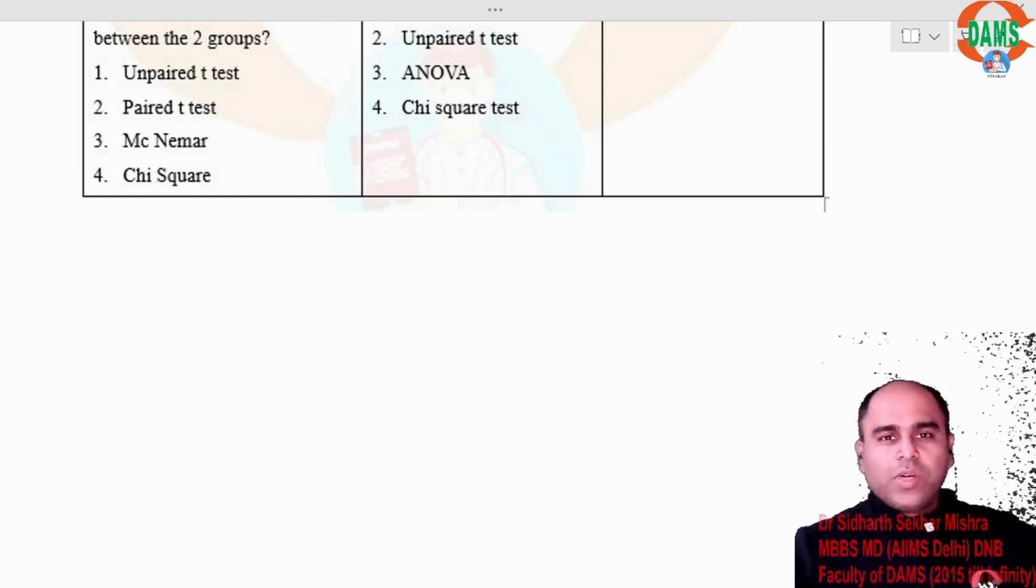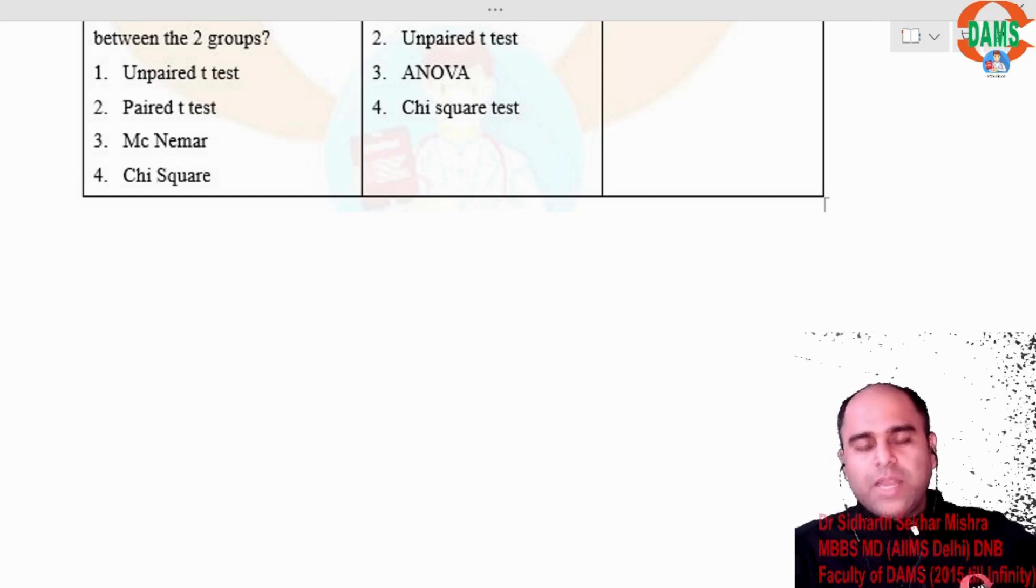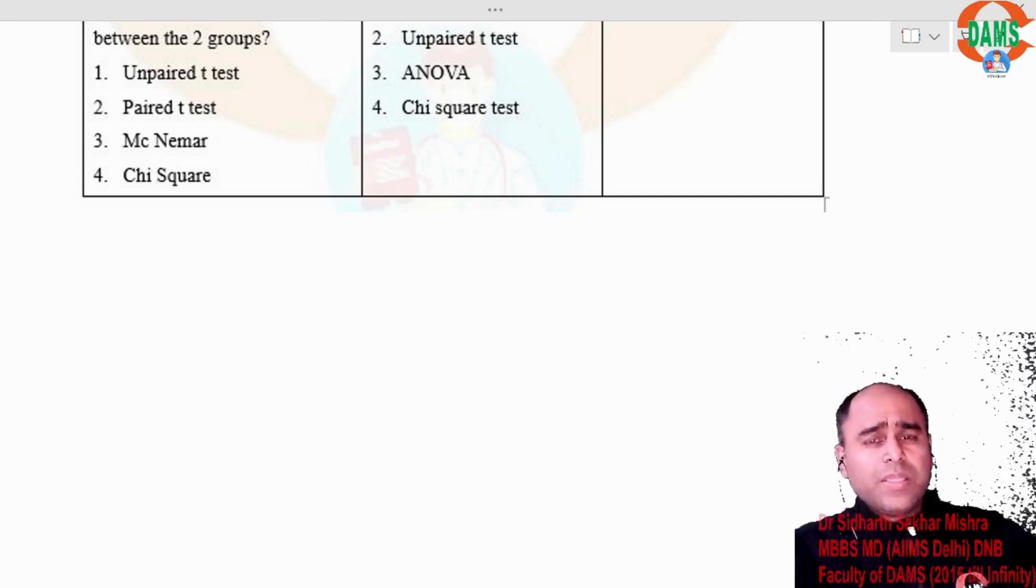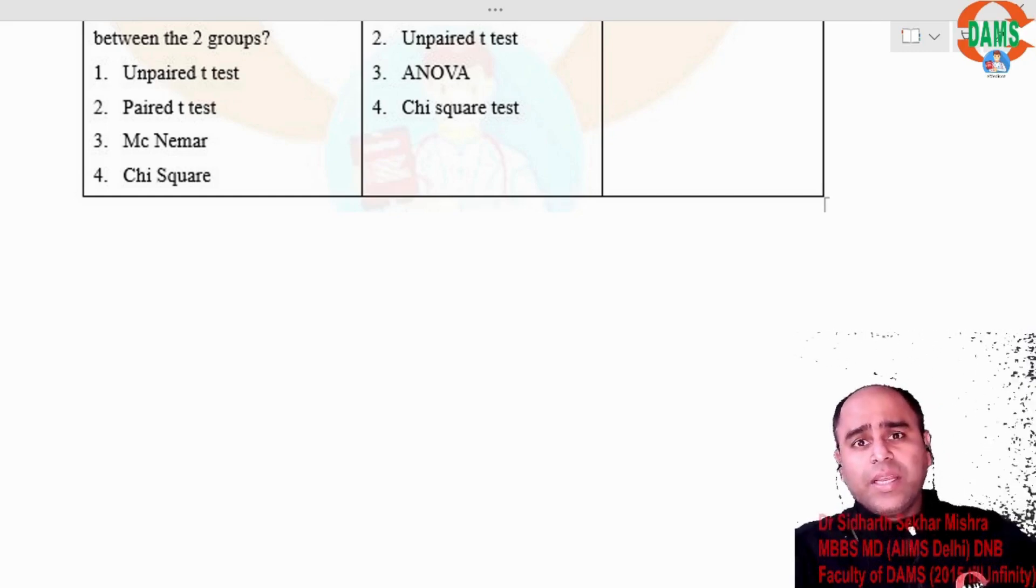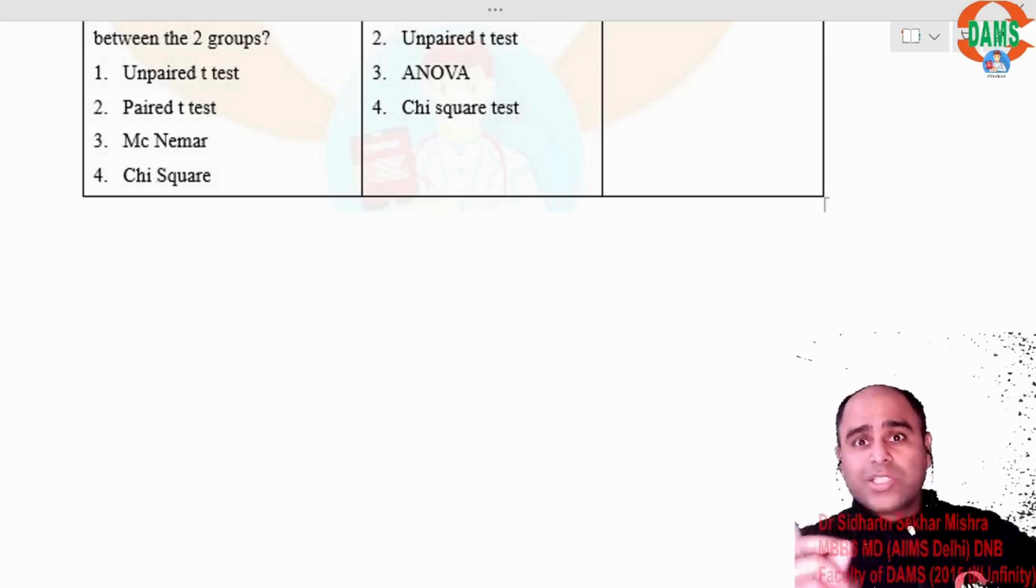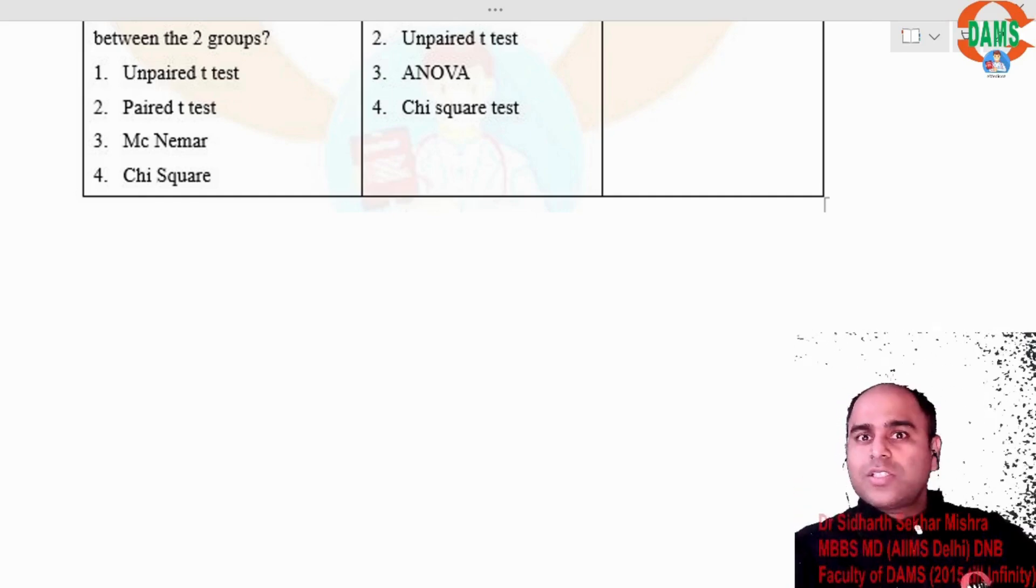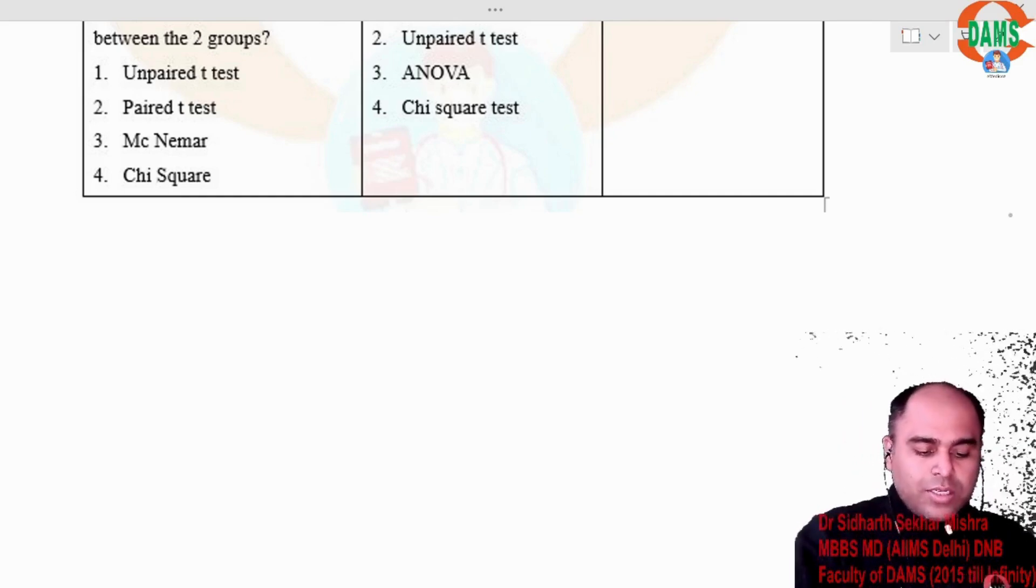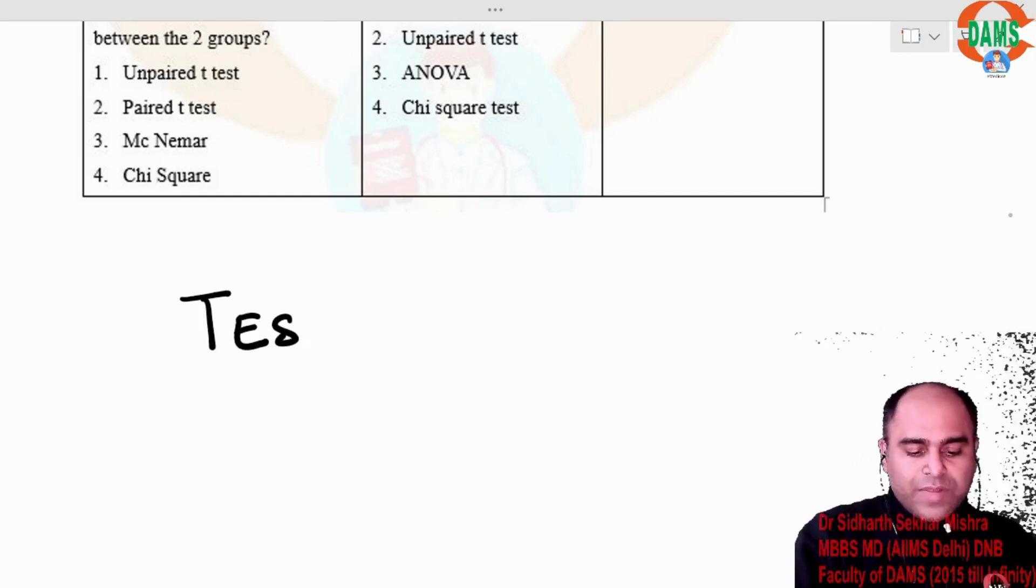Now here I want to tell you a very important concept which is asked in the NEET PG exam. In the year 2019, there were 6 questions of statistics, out of these 3 questions were from this topic. INICT also loves this topic. This is the topic of test of association.